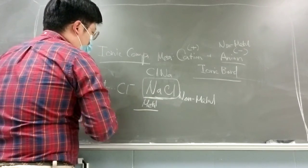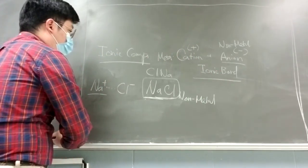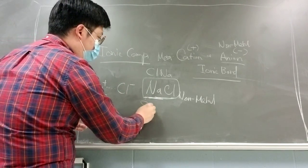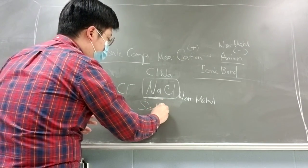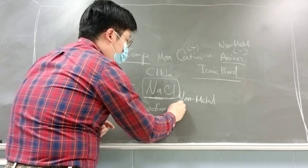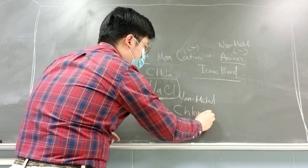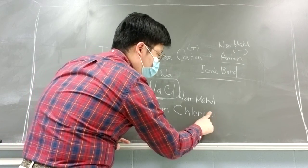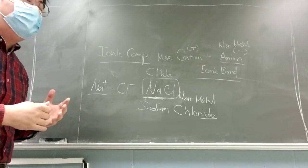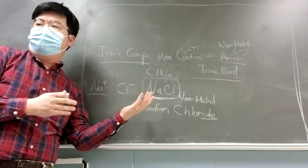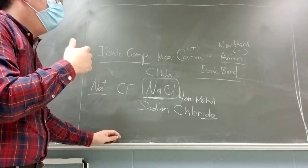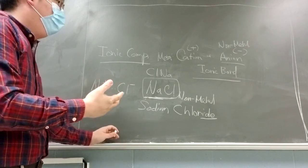When it comes to naming: for the first element (on the left), just copy the full name — so just 'sodium.' For the next one, chlorine, just change the last part to '-ide.' That's it. That's all you need to know. This is why we call this compound sodium chloride, not sodium chlorine. This is how we name ionic compounds using the '-ide' suffix.